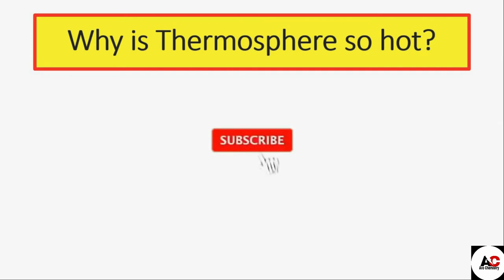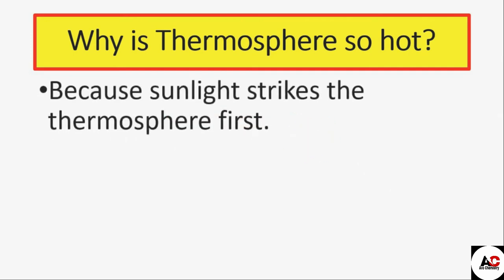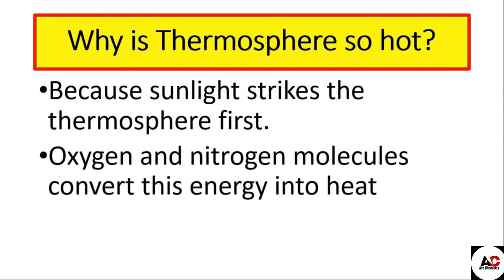Why is the thermosphere so hot? Because sunlight strikes the thermosphere first. Oxygen and nitrogen molecules convert this solar energy into heat energy. Oxygen and nitrogen molecules are present in the thermosphere, and they convert the solar energy into heat energy — that is why the thermosphere is so hot.